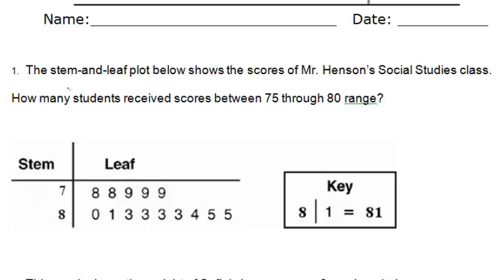Number one says, the stem and leaf plot below shows the scores of Mr. Hansen's social studies class. How many students received scores between 75 and 80?